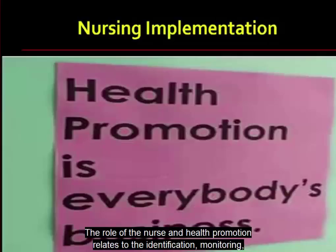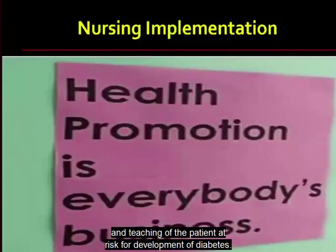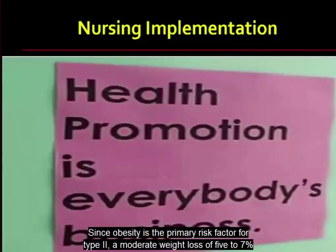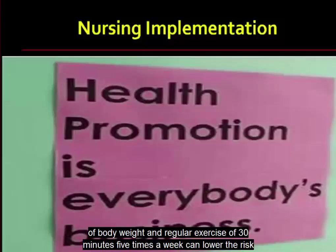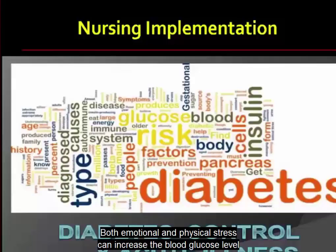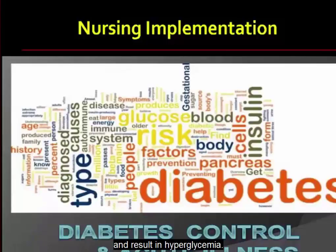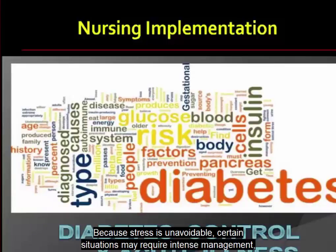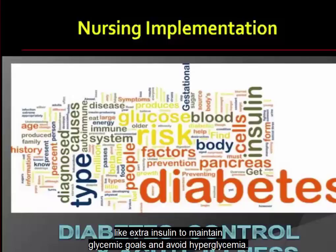The role of the nurse in health promotion relates to identification, monitoring, and teaching of patients at risk for development of diabetes. Since obesity is the primary risk factor for type 2 diabetes, a moderate weight loss of 5–7% of body weight and regular exercise of 30 minutes five times a week can lower the risk of developing type 2 diabetes by up to 58%. Both emotional and physical stress can increase blood glucose levels and result in hyperglycemia. Certain situations may require intense management, like extra insulin, to maintain glycemic goals and avoid hyperglycemia.